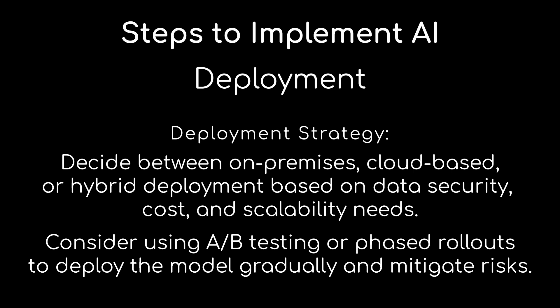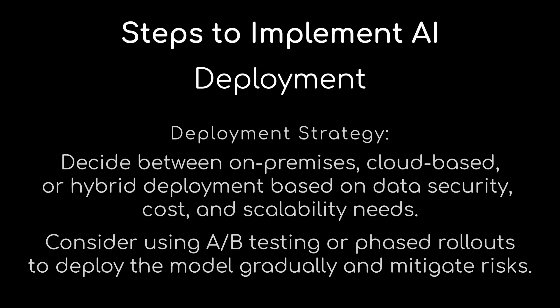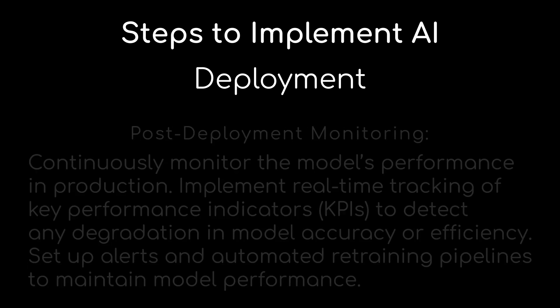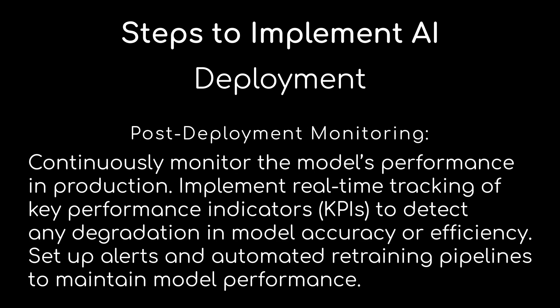We should consider using A/B testing or phased rollouts to deploy the model gradually and mitigate risks. Then finally, we need to do our post-deployment monitoring — testing the accuracy of the model again and iterating to make it more accurate by bringing in more data. There's a whole cycle to this, which we refer to as machine learning ops or MLOps. These are the key stages to consider as we're developing and deploying our models to our applications.